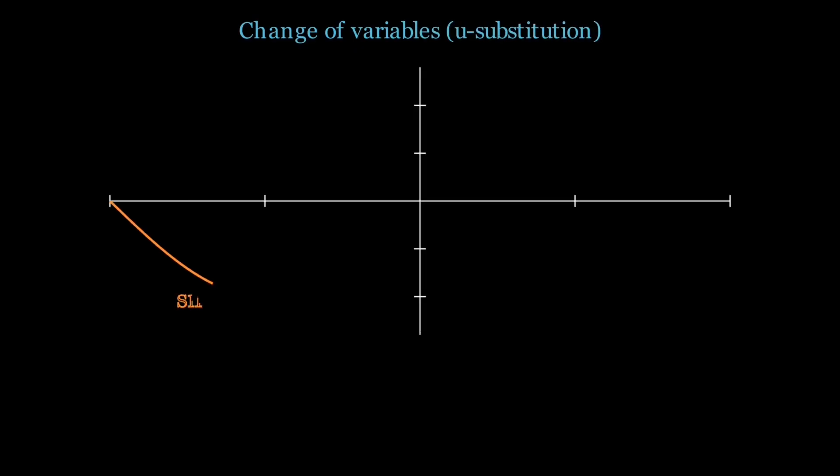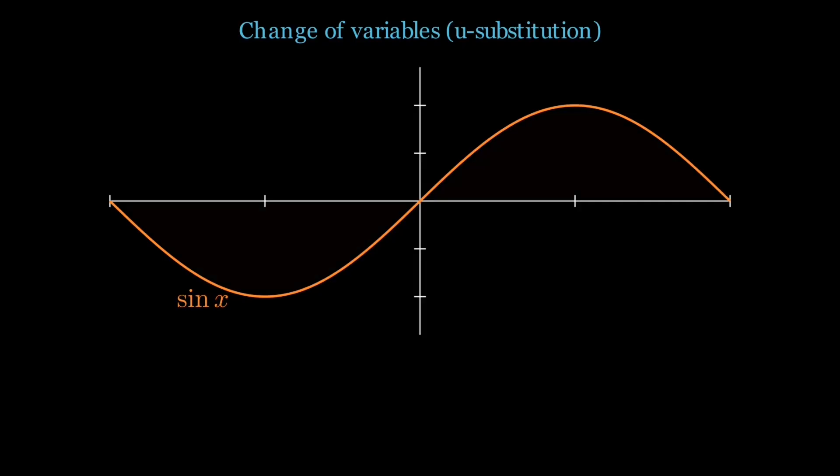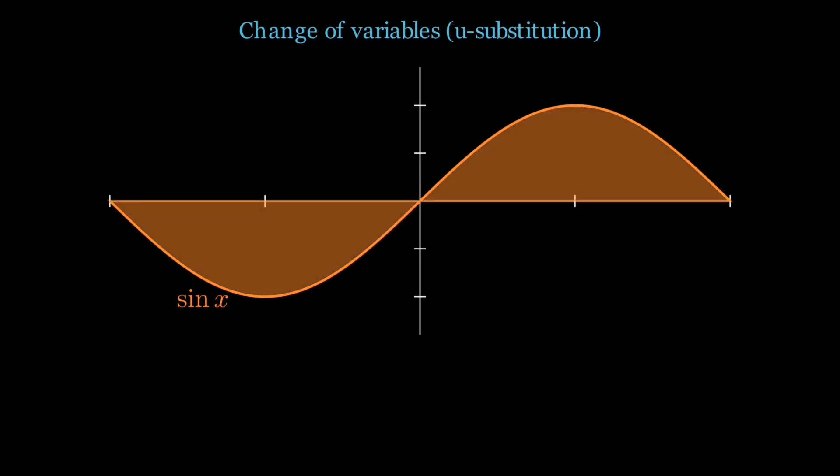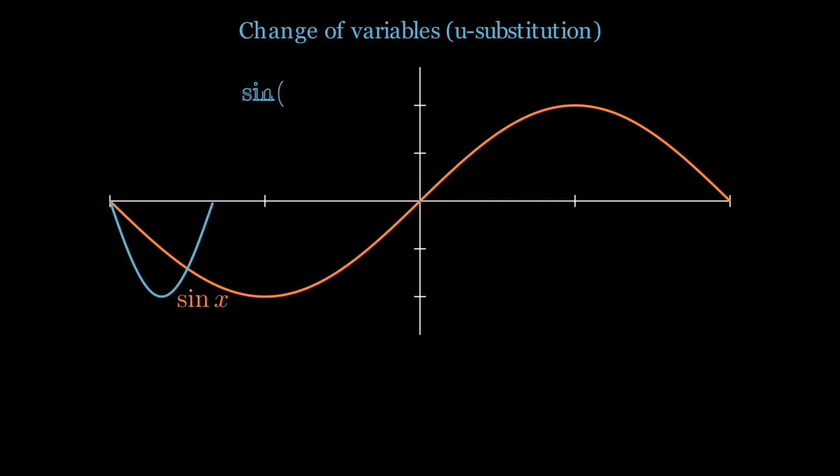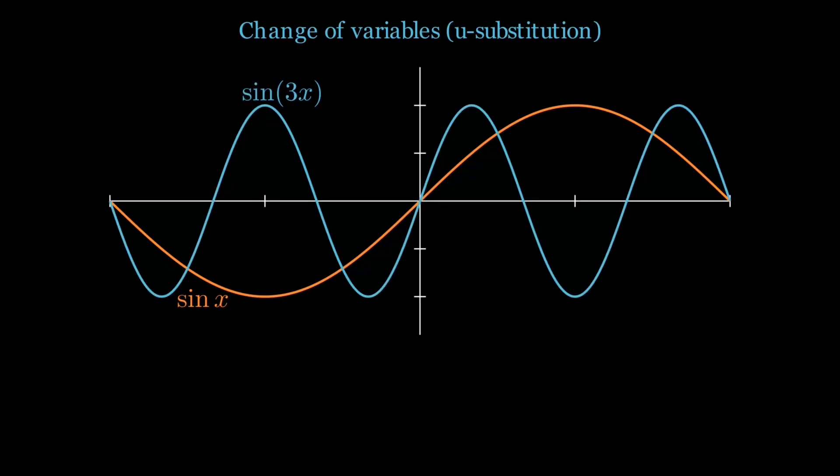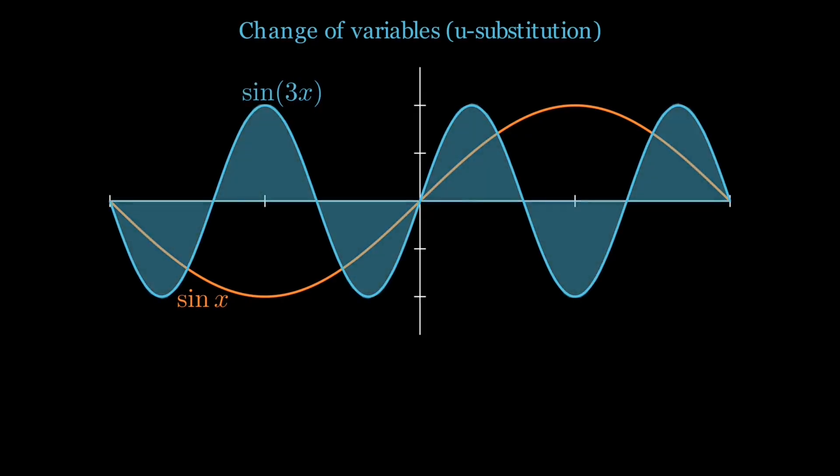So, we meet the antidote to the chain rule: change of variables. When the function inside is complicated, we rename it with a simpler variable and then we carry along its differential and measure the area in this new coordinate. The area's value doesn't change, only the ruler we're using to measure it.